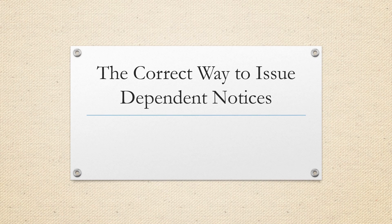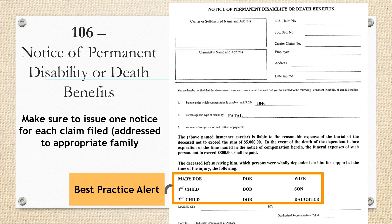The Correct Way to Issue Dependent Notices — Notice of Permanent Disability or Death Benefits: If the deceased had dependents from separate families, a notice has to be issued for each family. Do not issue one notice for all families, and make sure they are addressed appropriately to each family. On line number 1, indicate compensation is payable under ARS 23-1046. On line 2, indicate fatal or fatality. Best practice is to indicate the name of the surviving spouse and their date of birth, and the name and date of birth of any dependent children.